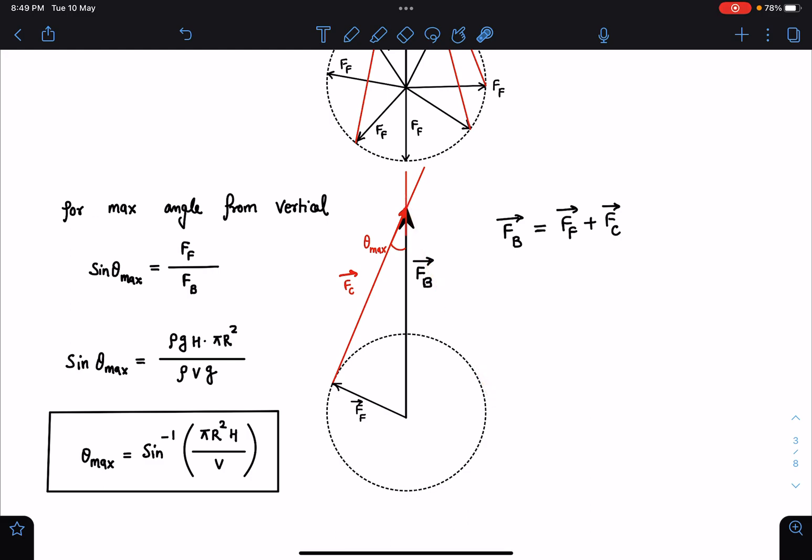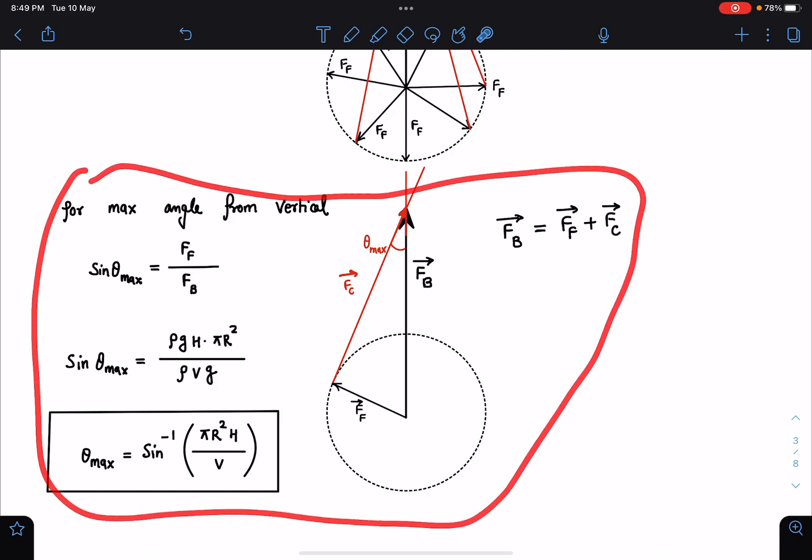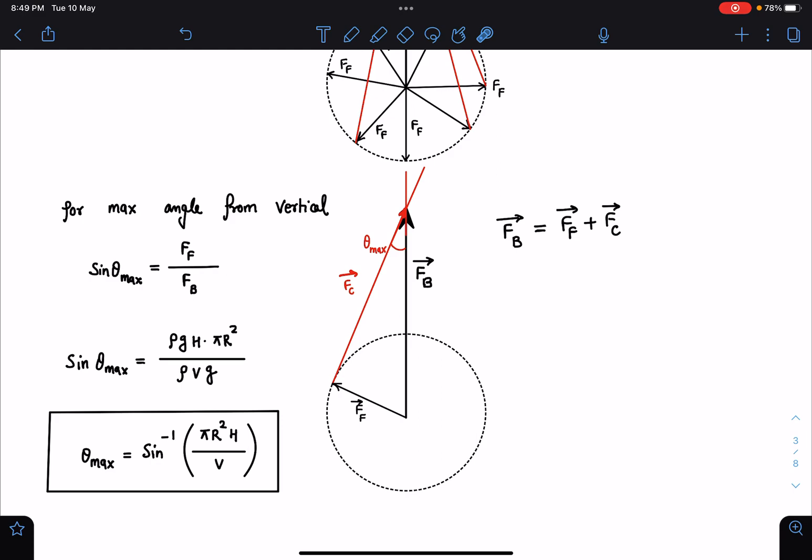Now this is very simple. We can directly say, if you know the concept, all those things you don't need to require, you will just come to this part and directly within one minute you will be solving this question. So for max angle from the vertical you can say sin θ max is nothing but force on flat surface divided by buoyant force, FF by FB.